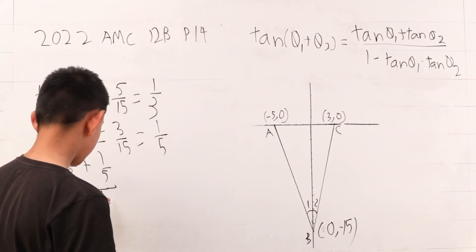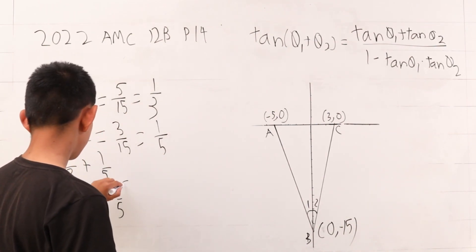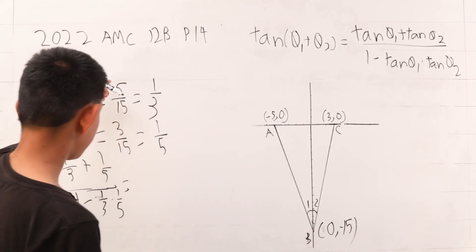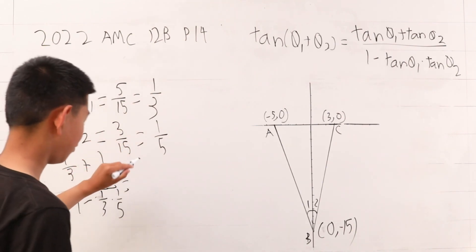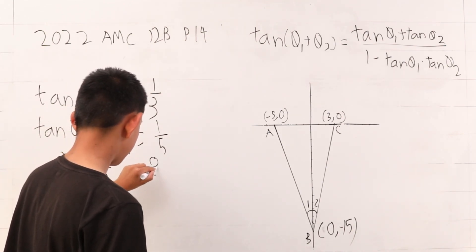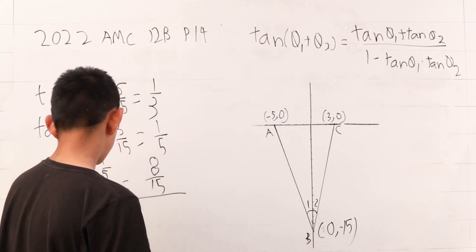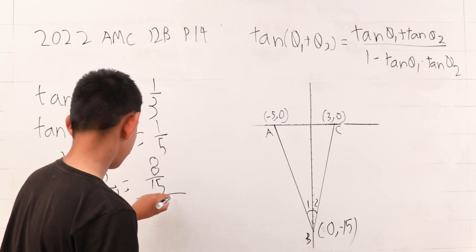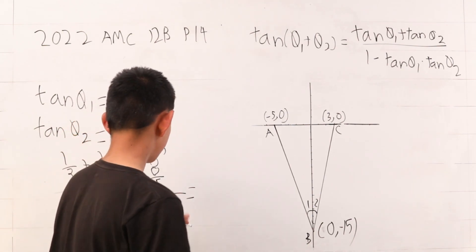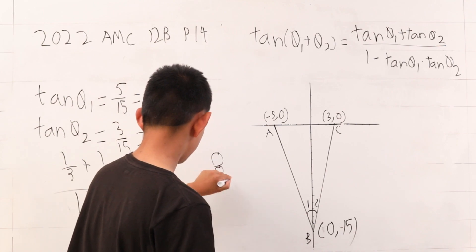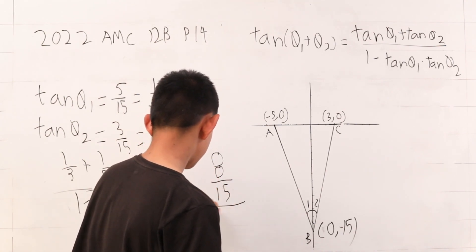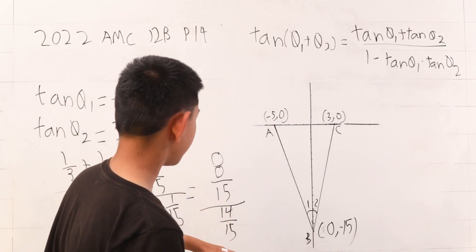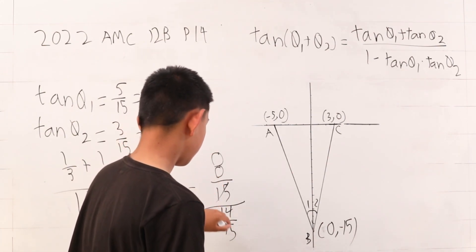minus 1 third times 1 fifth. This is equal to, well I'll just simplify it, 5/15 plus 3/15, 8 divided by 15, and then you divide that whole thing by 1 minus 1 over 15, which is equal to 8 over 15 divided by 14 over 15. And when you basically divide these, you get that these cancel.